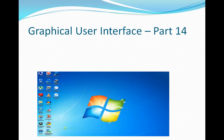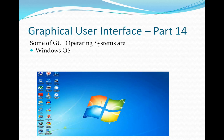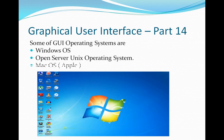There are several GUI operating systems, like Windows operating system, Linux operating system, and Mac OS — Apple's operating system. These are all called graphical user interface systems. Apart from these, nowadays when we talk about mobiles, mobile devices also have an operating system.